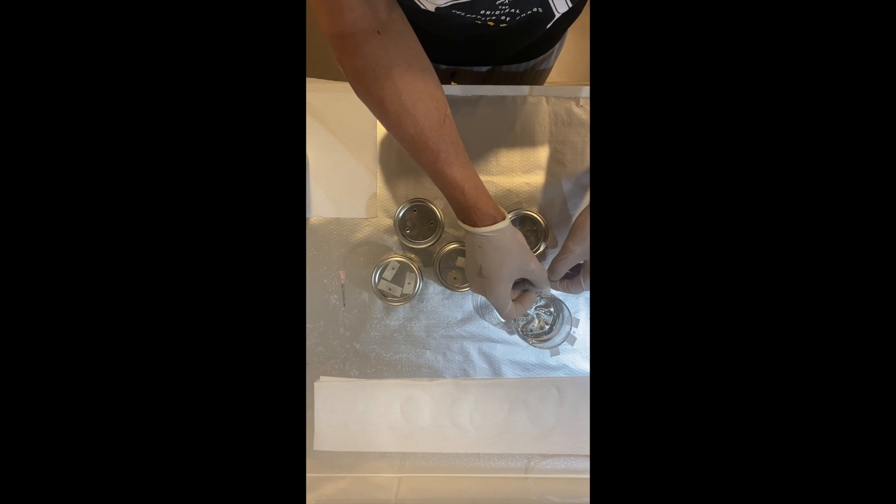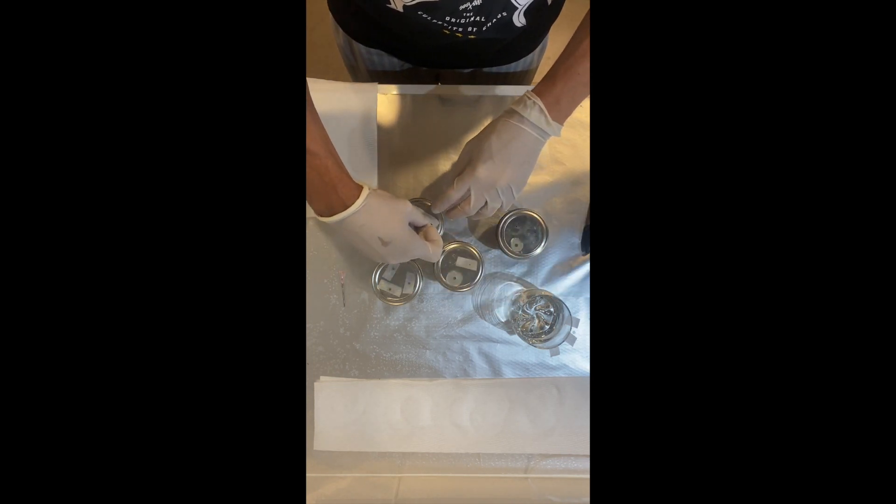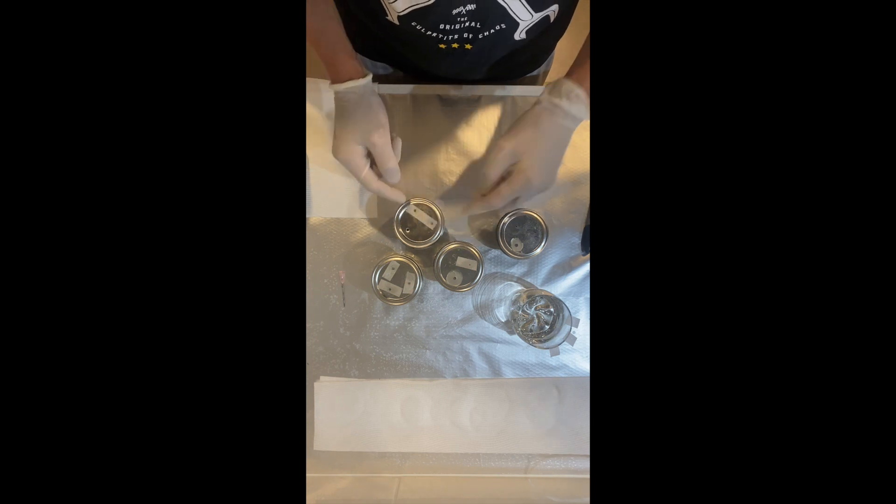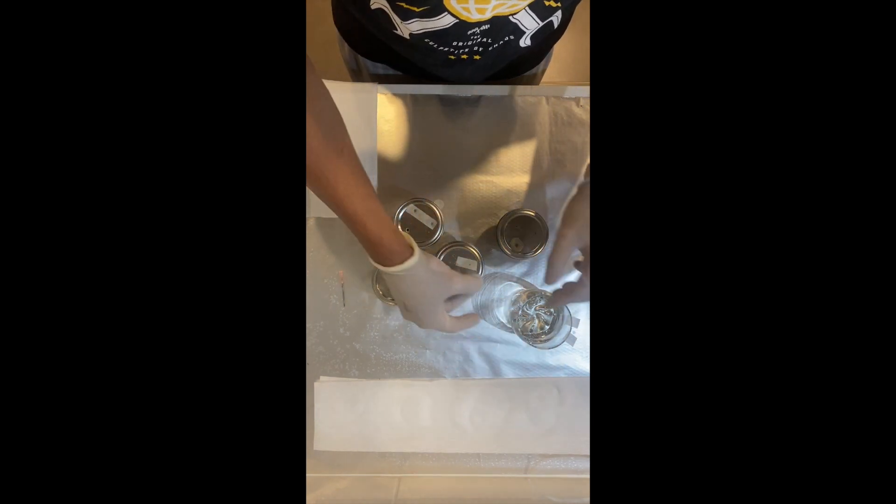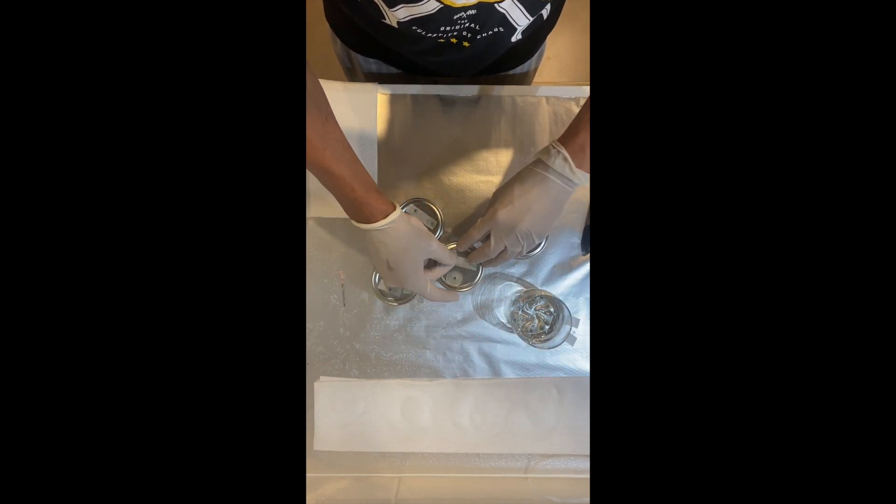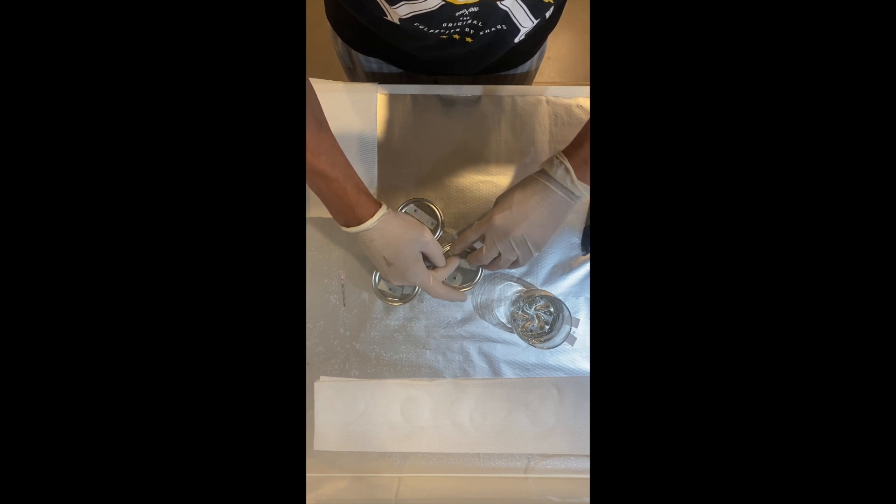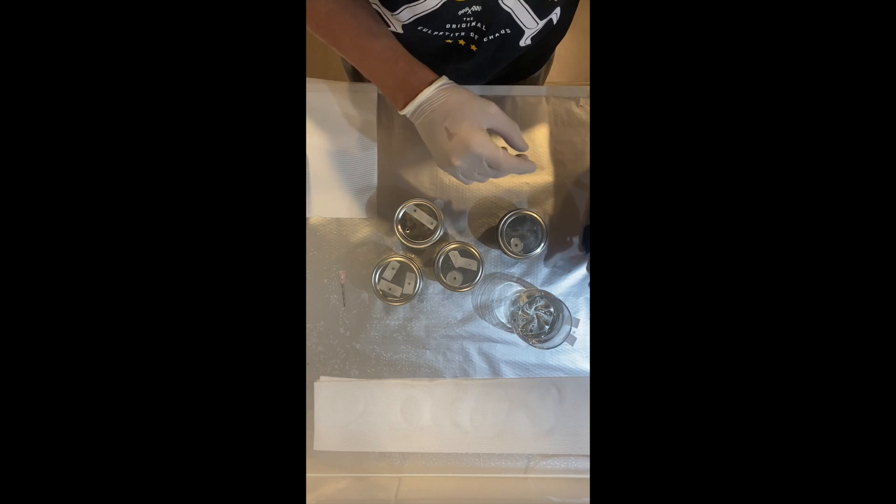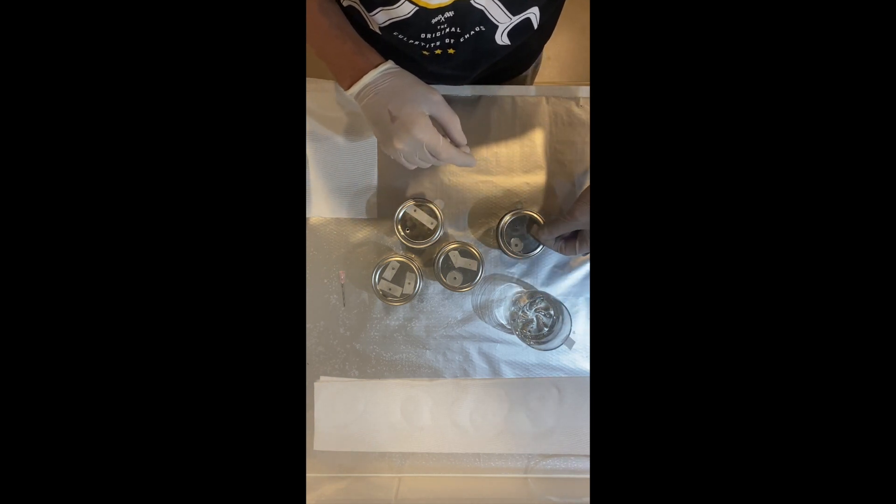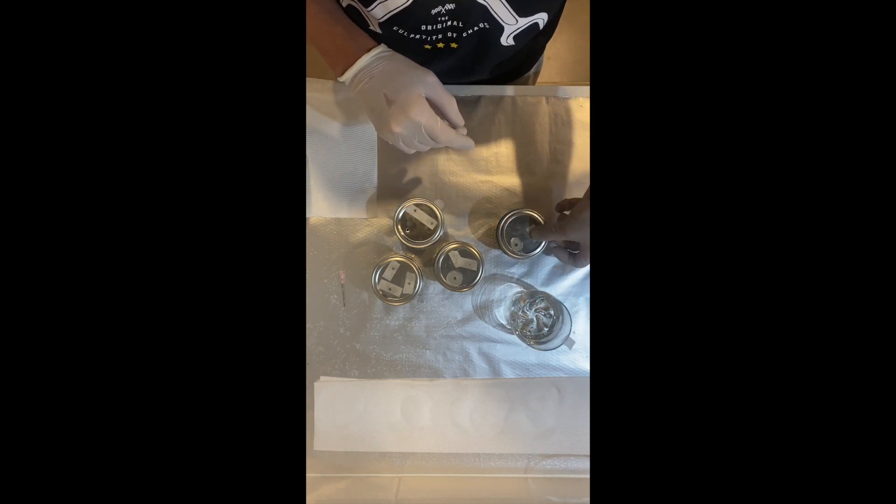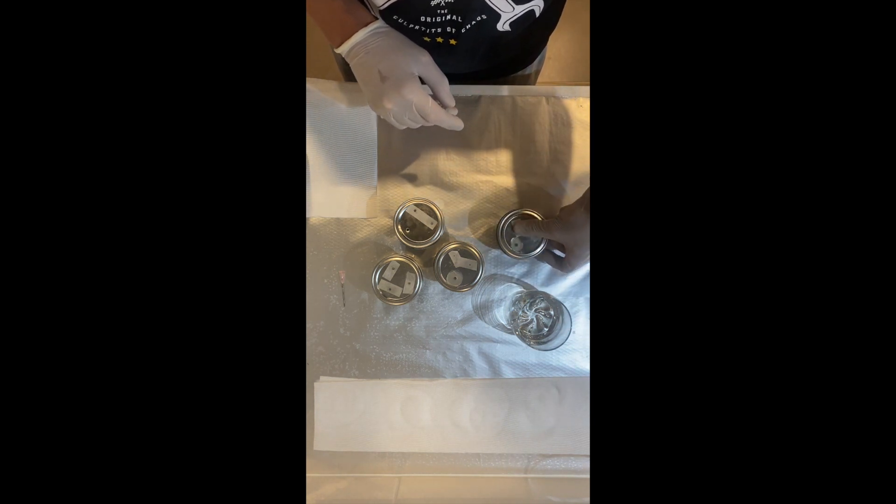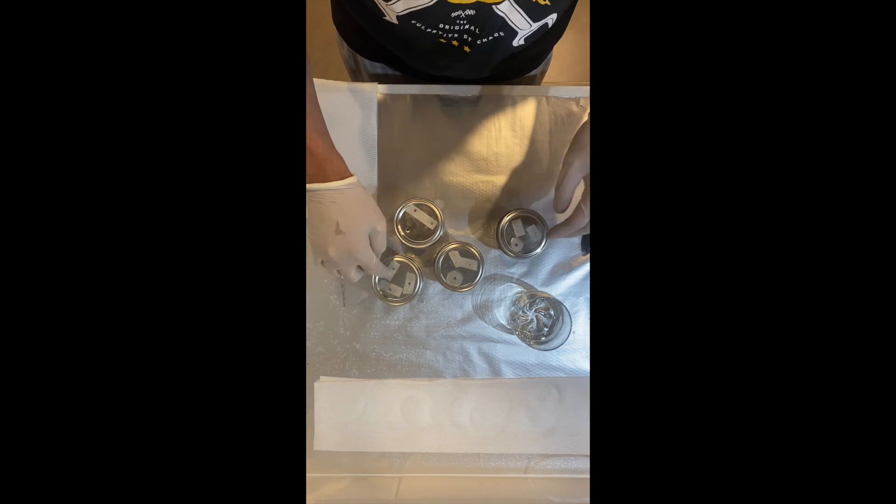Once that's done, we are going to use the tape that's there, if it's big enough, or you can put another piece of tape if you really need to. And we're just going to write the date. Just gives you an idea, once you have a few different sets of jars going guys, when they were inoculated, how long you should be waiting, if there might be a problem with them, etc. So I do always like to date my jars.